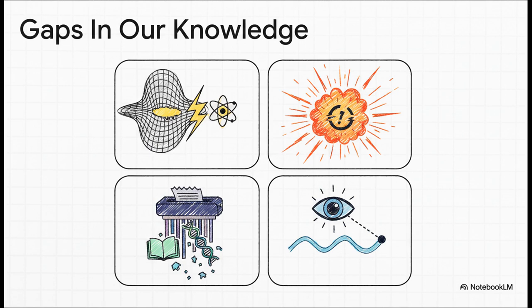For starters, our theory for the super big stuff, general relativity, and our theory for the super small stuff, quantum mechanics, they just don't play nice together. Then there's the big bang. It supposedly starts from a singularity, a point of infinite density where all our math just breaks. And black holes? They seem to just gobble up information, which breaks a fundamental rule of physics, and we still don't really know what decides the outcome of a quantum event. It's a bit of a mess.